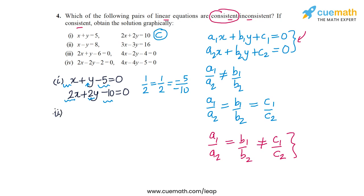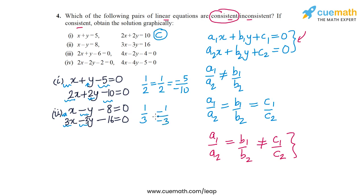The second pair is x − y = 8 (or x − y − 8 = 0) and 3x − 3y = 16 (or 3x − 3y − 16 = 0). Here a1/a2 = 1/3 and b1/b2 = −1/−3 = 1/3, so these are equal. But c1/c2 = −8/−16 = 1/2, which is not equal to 1/3. So a1/a2 = b1/b2 ≠ c1/c2, meaning the second pair is inconsistent — the lines are parallel.